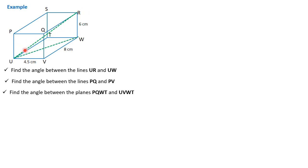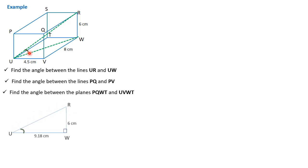The line U,R is the longest diagonal in the cuboid from U to R, and U,W is a diagonal from U to W as shown there. To illustrate this further, since we are looking for the angle between the lines U,R and U,W, it is that angle indicated there. I have extracted it for you in a right angle triangle below.